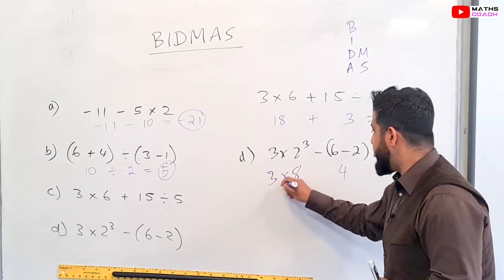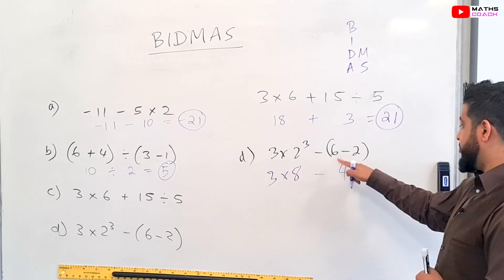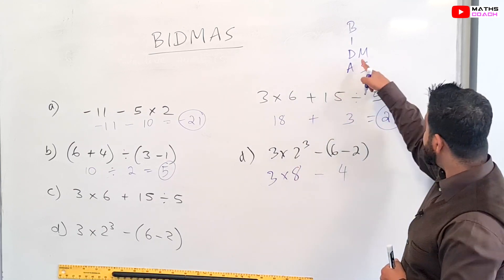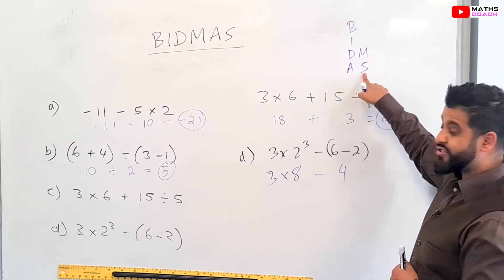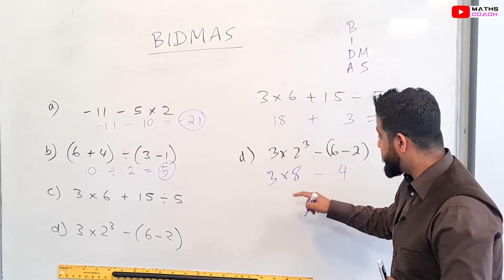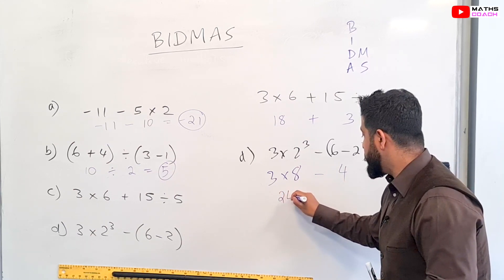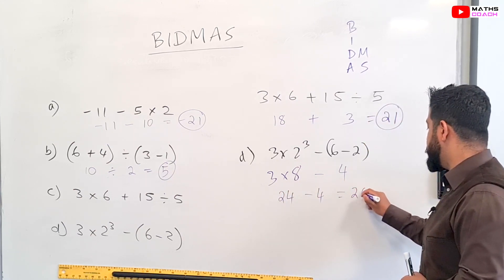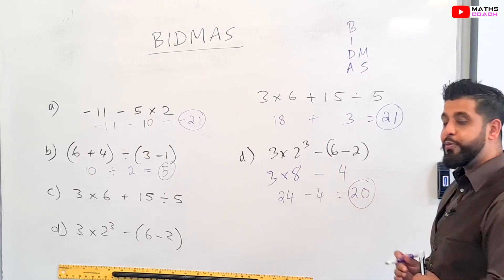So we have 3 × 8, and then we have minus the bracket which was 4. So now next, multiplication is before subtraction which is right at the end here, so we'll do 3 × 8 first which is 24. 24 - 4 is equal to 20, and that's my final answer.